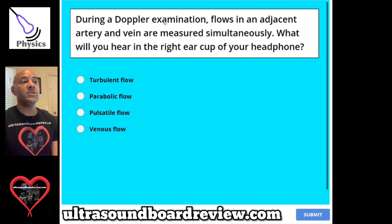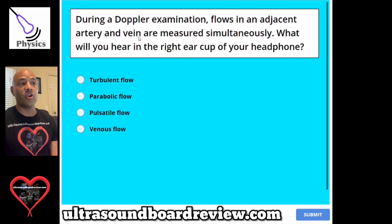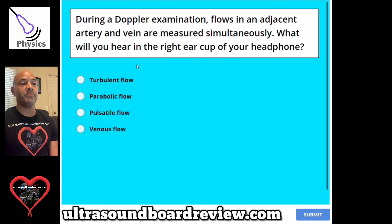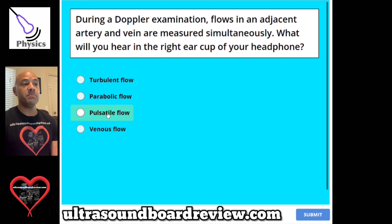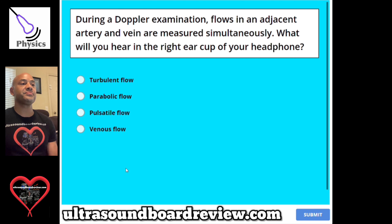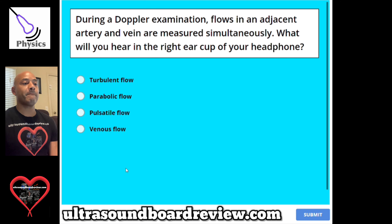Question 111. During a Doppler examination, flows in an adjacent artery and vein are measured simultaneously. What will you hear in the right ear cup of your headphone? A, turbulent flow. B, parabolic flow. C, pulsatile flow. Or D, venous flow? The answer is D, venous flow.